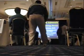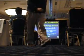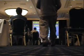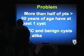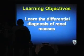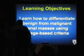Good afternoon. In the next 55 minutes, I'm going to try to get through kidneys and adrenal. First we're going to talk about renal masses. The problem with renal masses is that more than half the patients over the age of 50 have at least one cyst, and cysts and renal cell cancer look alike. We'll learn the differential diagnosis of renal masses, how to differentiate using image-based criteria, and the role of CT-guided biopsy in managing indeterminate masses.